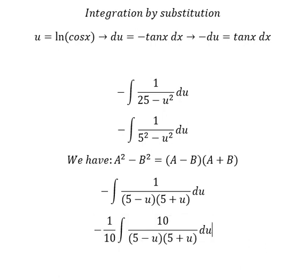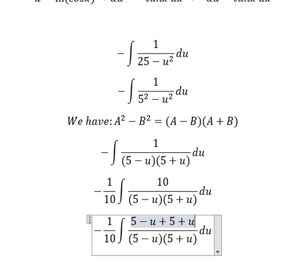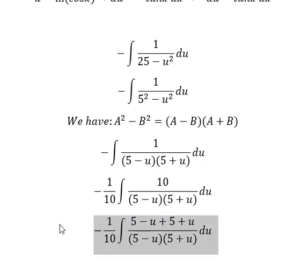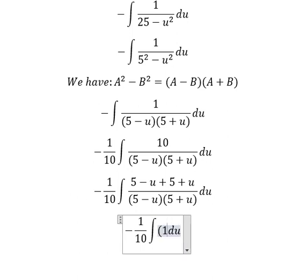We know that the number 10 is about 5 plus 5, so we put negative u here and then positive u. So we have 5 minus u divided by 5 minus u, and 5 plus u divided by 5 plus u, and now we have it like this.